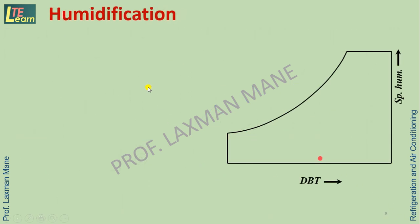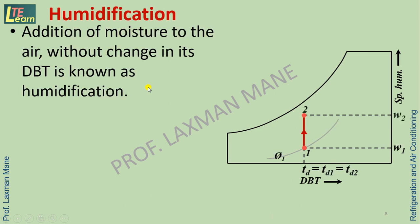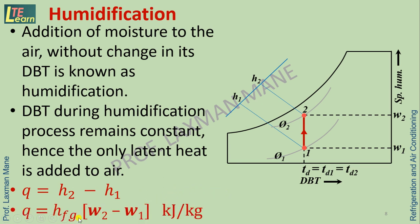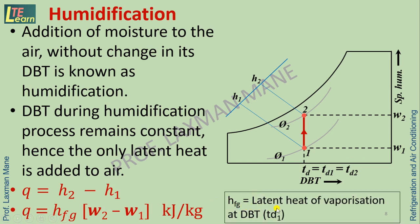In humidification, addition of moisture to the air is done without any change in its dry bulb temperature. The dry bulb temperature remains constant during humidification; hence only latent heat is added to the air, given by Q = H2 − H1. Another formula is Q = hfg × (W2 − W1) kJ/kg, where W1 and W2 are the specific humidity at inlet and outlet respectively, and hfg is the latent heat of vaporization at dry bulb temperature Td1.